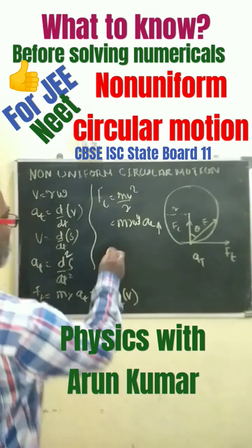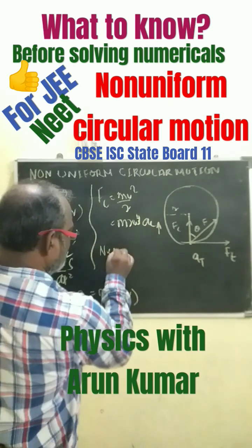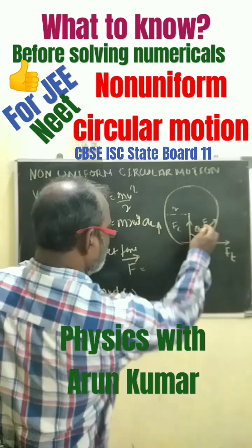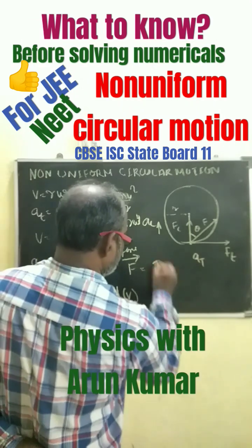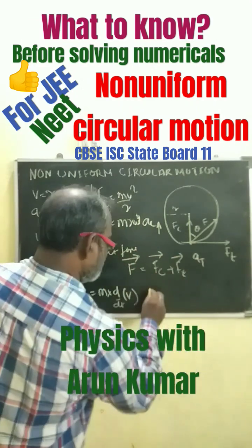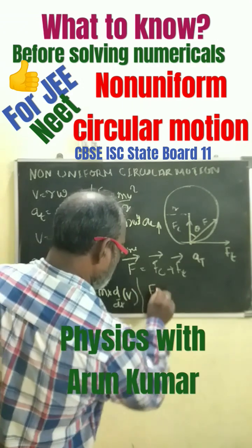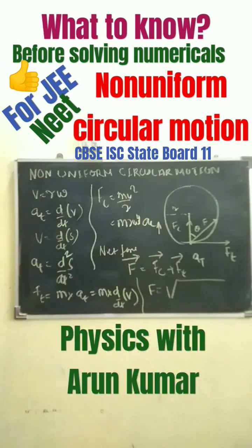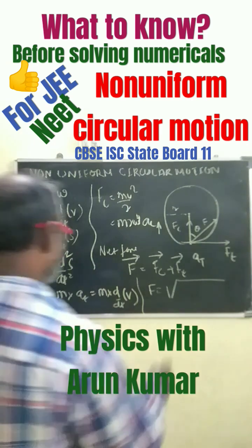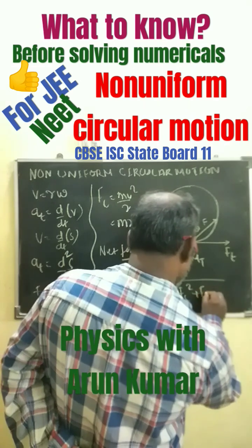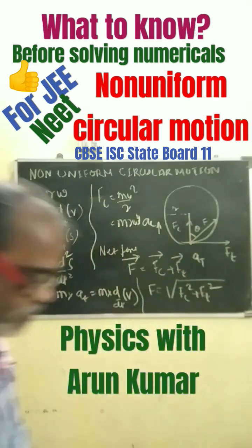Now, the net force F equals F_c plus F_t. Therefore, the magnitude of the net force is F equals the square root of F_c² plus F_t².